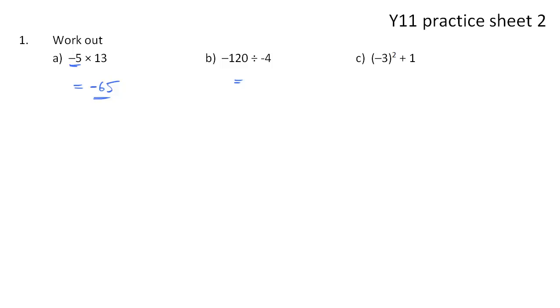Part B, simply do the sum first, so -120 divided by -4, which you should be able to do in your head, is 30. And then consider that they're both negative, which means the answer is going to be positive.